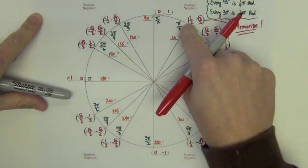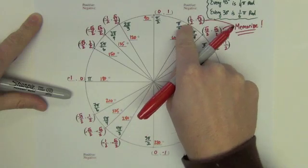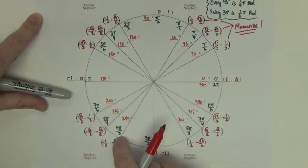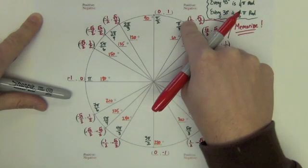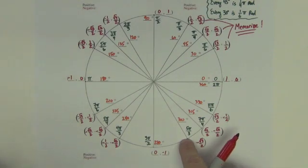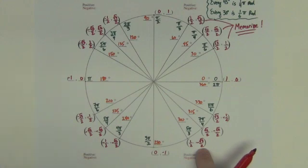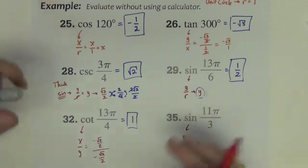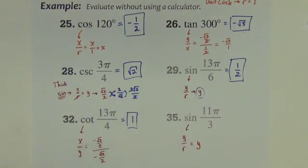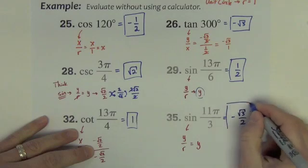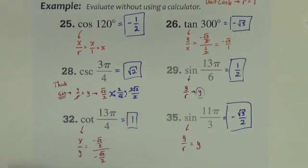11 pi over 3. So the thirds are right here. They're every 60 degrees. So here's 1 third, 2 thirds, 3 thirds, 4 thirds, 5 thirds, 6 thirds, 7, 8, 9, 10, 11 thirds. 11 thirds is the same as 5 pi over 3. And we want the y value of the point. So the y value of that point is negative square root of 3 over 2. And that's it.